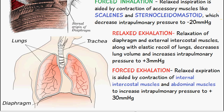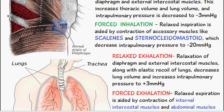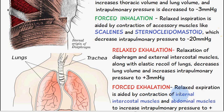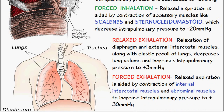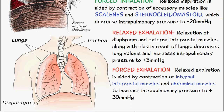Forced exhalation involves the same mechanism as relaxed exhalation, but is aided by additional contraction of the internal intercostal muscles — visible on the inside of the rib cage — and the abdominal muscles. This increases intrapulmonary pressure to plus 30 millimeters of mercury, forcing air out by decreasing lung volume by a much greater amount. So in summary: relaxation of diaphragm and external intercostals, plus contraction of internal intercostals and abdominal muscles.